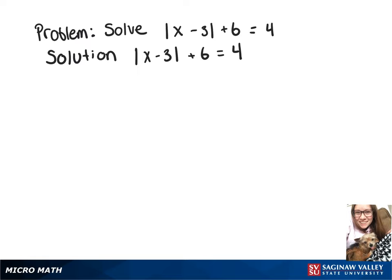In this video, we've got the equation: the absolute value of x minus 3, plus 6, equals 4. What we need to do here is subtract 6 from both sides, and that's going to leave us with the absolute value of x minus 3 equals negative 2.